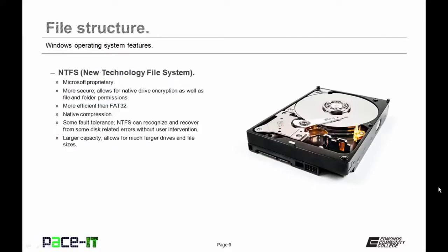That wasn't good enough for Microsoft, so they moved on to NTFS — New Technology File System — which is proprietary to Microsoft. It's more secure, allowing native drive encryption and both file and folder permissions. It's more efficient than FAT32, supports native compression, has more fault tolerance, recognizes and recovers from some disk errors without user intervention, and allows for larger capacity.